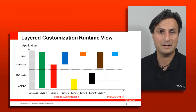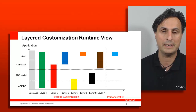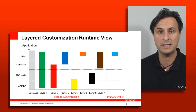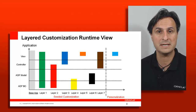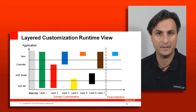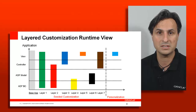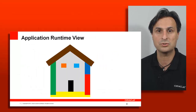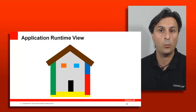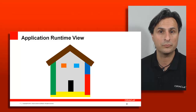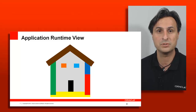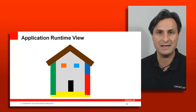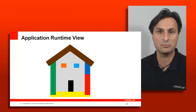If layers have contradicting information — one layer adding a list of values, another removing it, the next adding it back — the top layer wins. At runtime, the user cannot distinguish what is the base application and what is added or removed through customization unless you give them additional privileges. From a performance perspective, they shouldn't even recognize that this is a customized application.